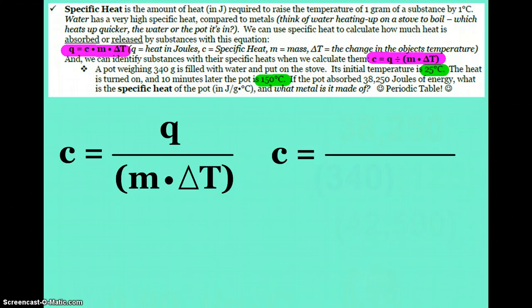Water has a very high specific heat for substances compared to most metals. Think of water heating up on a stove to boil. When you're heating up that water, the water does not change temperature as quickly as that metal pot that you might have on the stove. It gets very hot to the touch very quickly. And we can use specific heat to calculate how much heat is absorbed or released by a substance.